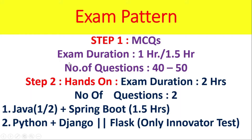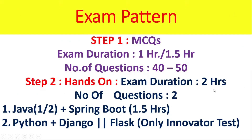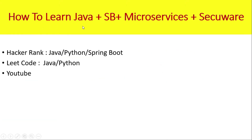Step 1: MCQs. Exam duration is 1 to 1.5 hours. Number of questions: 40 to 50. If you chose Java-based tech stack, MCQ skills cover Java, Spring Boot, Microservices, and Cyber Security Secure. If you chose Python tech stack, Python-related MCQs will be there. For hands-on, exam duration is 2 hours with 2 questions. For Java candidates: Java hands-on 1.5 hours, Spring Boot REST API development 1.5 hours. For Python: Python 1.5 hours, Django 1.5 hours. Flask Innovator Test also 1.5 hours. Python plus Django is for digital; Flask only for the main cycle.